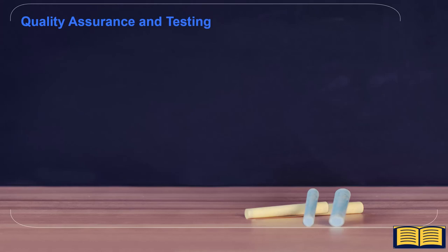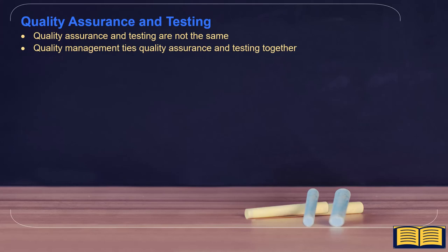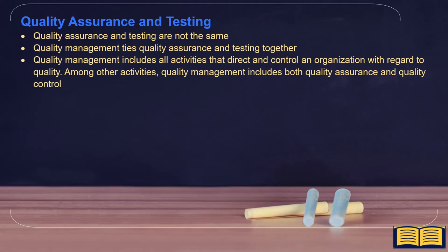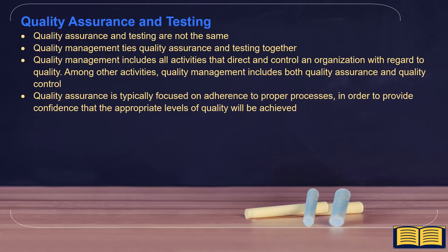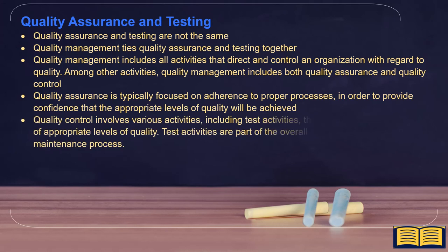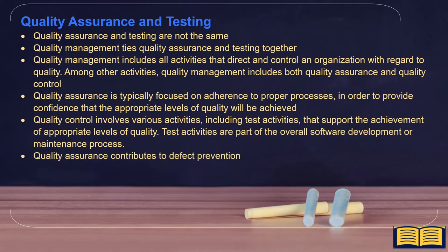The next topic is quality assurance and testing. Quality assurance and testing are not the same. Quality management ties them together and includes all activities that direct and control an organization with regards to quality, including both quality assurance and quality control. Quality assurance is focused on adherence to proper processes to provide confidence that appropriate levels of quality will be achieved. Quality control involves various activities, including test activities, that support the achievement of appropriate levels of quality. Test activities are part of the overall software development or maintenance process. Quality assurance contributes to defect prevention, while quality control is a defect detection mechanism.